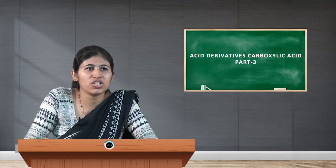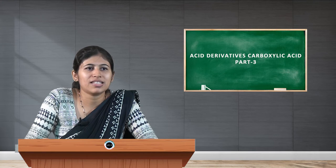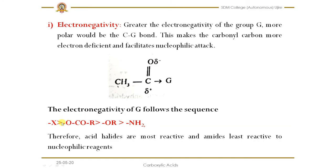Among the four functional groups — halogens, anhydrides, esters, and amides — halogens are most electronegative, then anhydrides, then esters. Although both anhydrides and esters contain oxygen, in anhydrides there is one additional carbonyl carbon which also withdraws electrons, making bond breaking easier. Among oxygen and nitrogen, oxygen is more electronegative than nitrogen, so amides are least reactive. Based on electronegativity: halogens are most reactive and amides are least reactive.